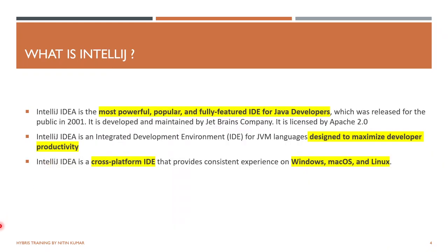So basically, what is IntelliJ? IntelliJ is an IDE used to maximize design and development productivity of a Java developer, a Hybris developer. It is a cross-platform IDE — it can be used on Windows, Mac OS, Linux — and it is the most powerful, popular, and fully featured IDE.